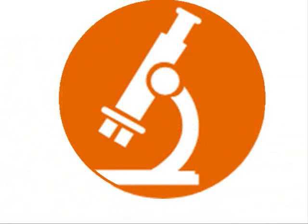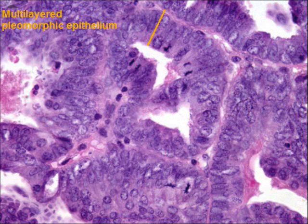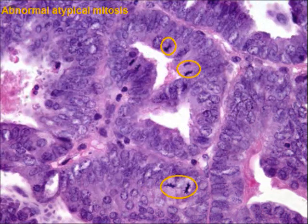Looking at the histology of the mass under the microscope, this reveals a complex epithelial growth pattern. There is little intervening stroma between the glands, and there is branching of large glands forming papillary structures. Under high power, there is multi-layered pleomorphic epithelium and frequent abnormal mitoses — all features of malignancy.